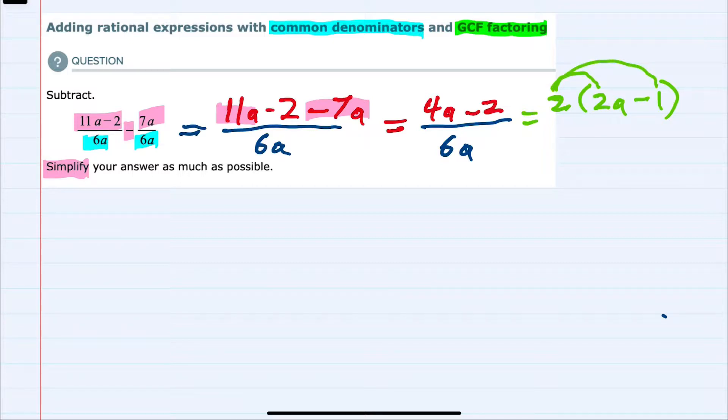Now that we've factored out the greatest common factor, there is an additional step of simplifying that we can do. Because if we have a common factor in the top and the bottom, we can cancel common factors. In this case, both the top and the bottom are divisible by 2.